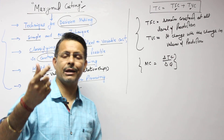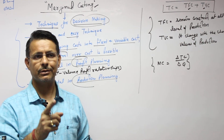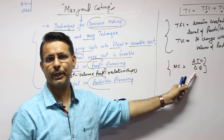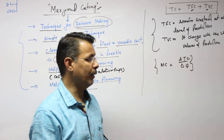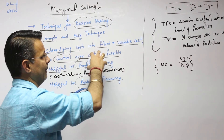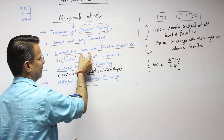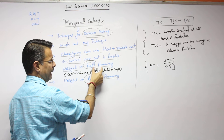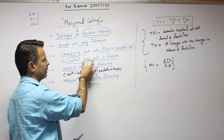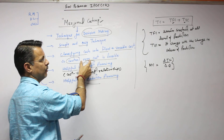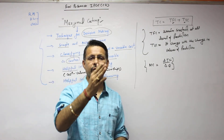Marginal costing is the unique cost due to change in quantity produced. Normally, it is a decision-making technique, the best technique for profit planning and production planning, and control over cost is possible through it.